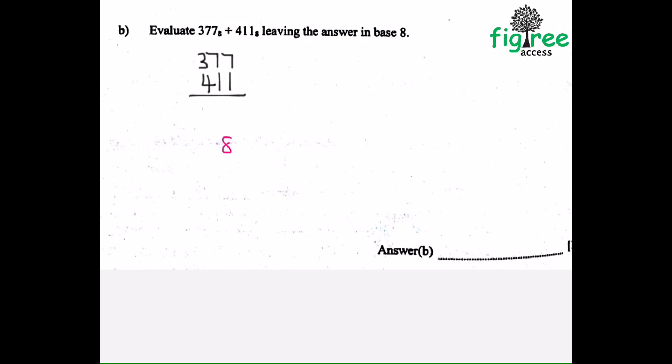On part B, this is the addition of number bases: 3,7,7,7 base 8 plus 4,1,1 base 8, leaving the answer in base 8. There's an easy method where we can just add directly in base 8. Remember that this is base 8. So 7 plus 1 is 8. We divide 8 by 8: it's 1, remainder 0. So we write 0 here and carry 1.